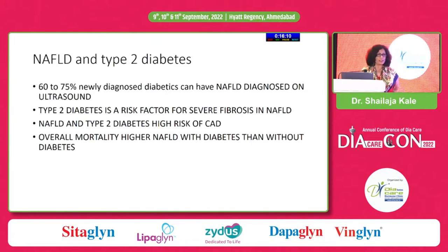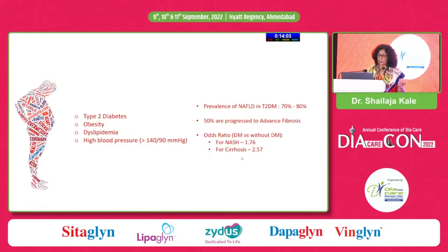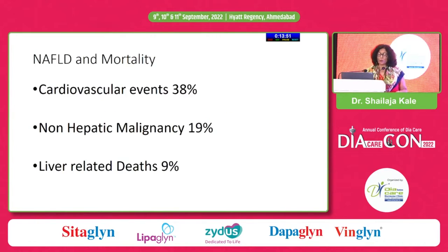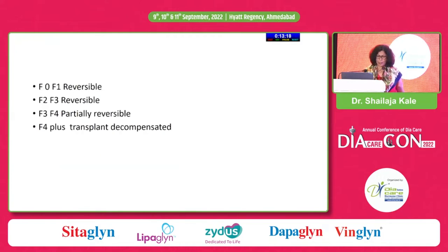In type 2 diabetes, the risk is much more with additional fatty liver. Advanced NASH or advanced cirrhosis is much higher if someone has diabetes. So in a diabetic clinic, a patient presenting with fatty liver should raise an alarm, which is not happening. Patients with NAFLD grade 1 to 2 die not because of advanced cirrhosis, but because of cardiovascular events — 38% mortality is due to cardiovascular events before they reach F3 stage of NASH.